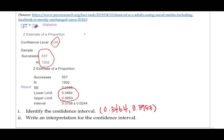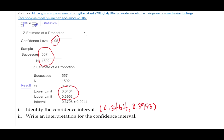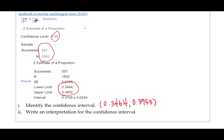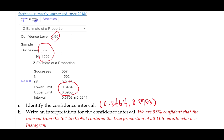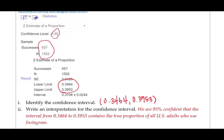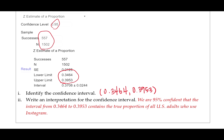And then let's write an interpretation for the confidence interval. When we interpret a confidence interval, we want to talk about how confident we are that the interval captures the true parameter. Our parameter here is the proportion of all U.S. adults who use Instagram. So the interpretation would look something like this: We are 95% confident that the interval from 0.3464 to 0.3953 contains the true proportion of all U.S. adults who use Instagram.